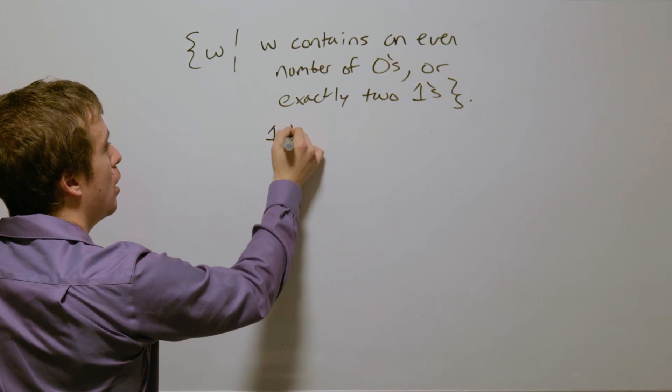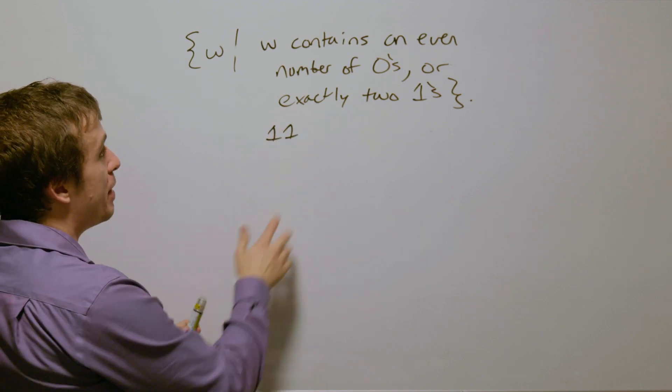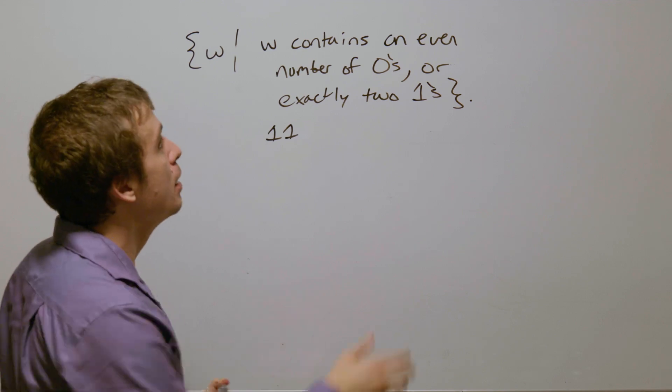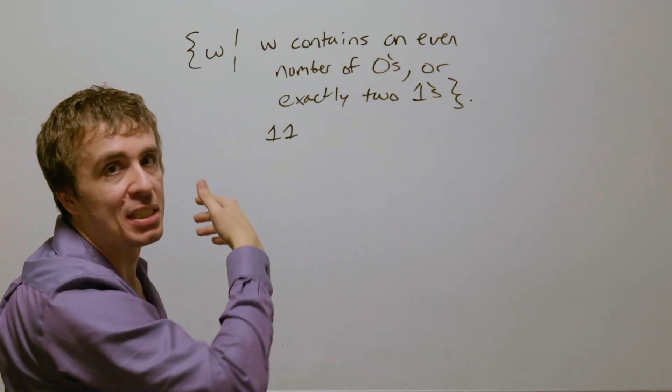So as an example, if it has one, one right there, that has exactly two ones, and so therefore is accepted, because it doesn't matter what the rest of the condition is.